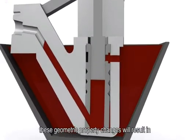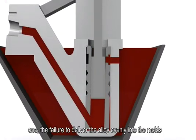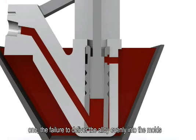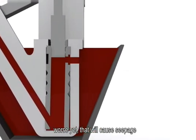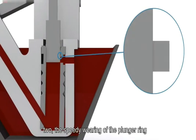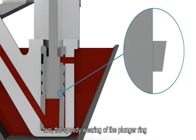These geometric property changes will result in: 1. The failure to deliver the alloy evenly into the moulds. Worse yet, that will cause seepage. 2. The speedy wearing of the plunger ring.